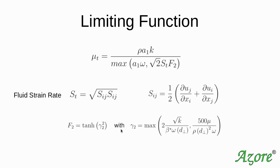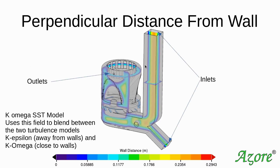There's also an F2 function — another hyperbolic tangent relationship — which is itself dependent on distances from the wall, as well as 500 over D-squared times omega. This produces the relationship used for effective viscosity. In the K-omega SST model in Azor, there's an additional field for wall distance. A display of a model shows values where higher values represent larger distances from the wall, which makes good sense given how turbulence depends on wall proximity.